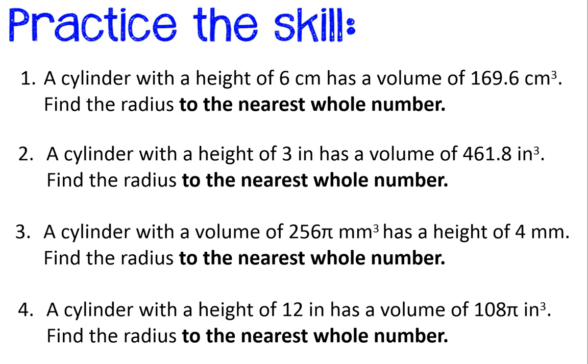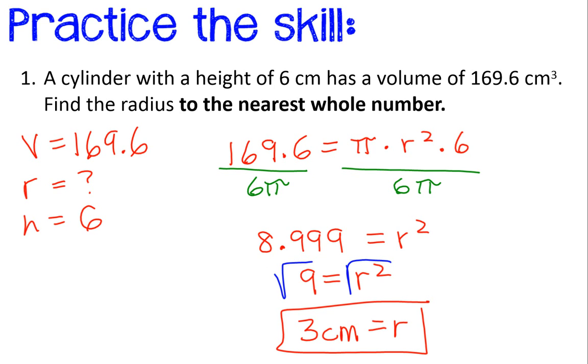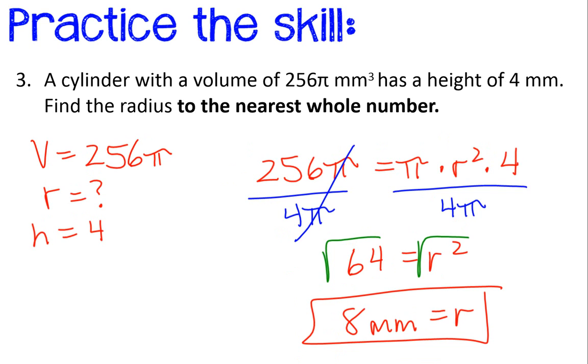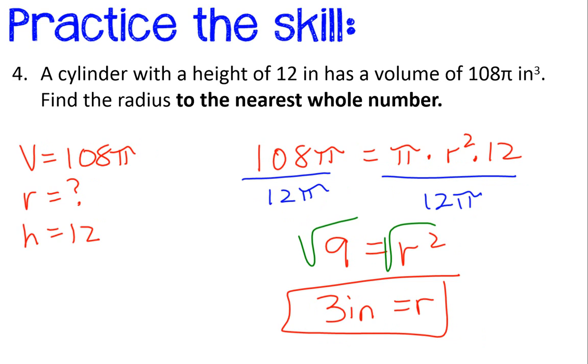You ready to check some answers? Let's see how you did. Number one, three centimeters. Number two, seven inches. Number three, eight millimeters. And last but not least, number four, three inches. I hope you got some good practice in. That concludes this video on how to find a radius when you're given the volume and the height.